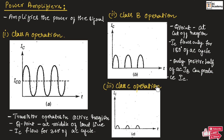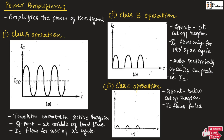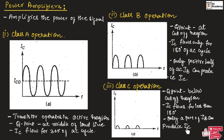Now let us understand class C operation. This is the output waveform for a class C power amplifier. For a class C power amplifier, the Q point will be below the cutoff region. Hence, the collector current flows for less than 180 degrees, which means only a part of the base current can produce the collector current, as shown in the figure.